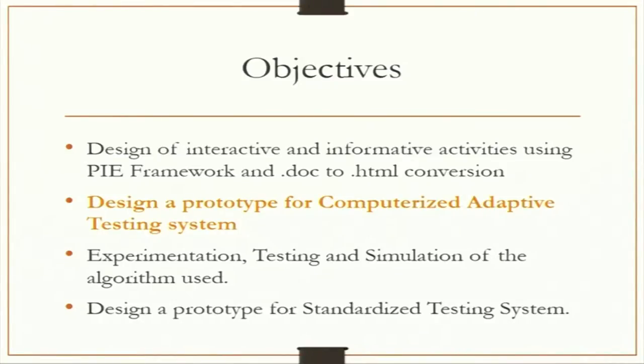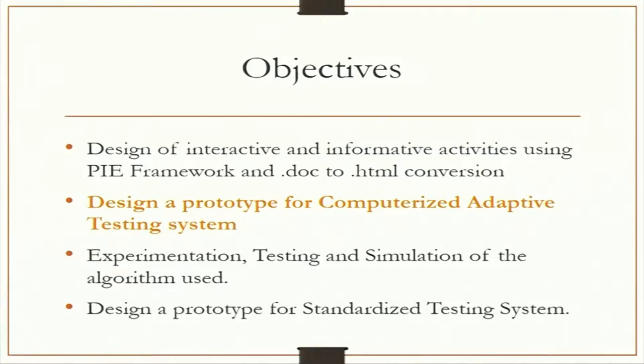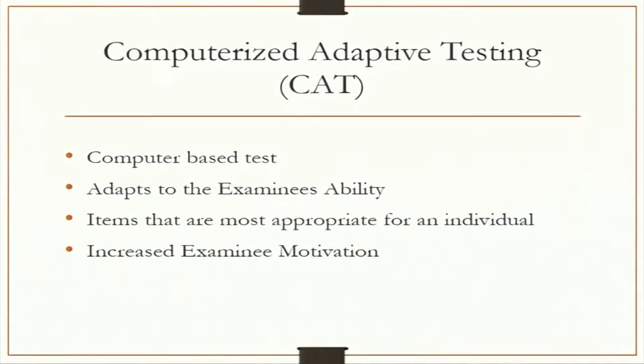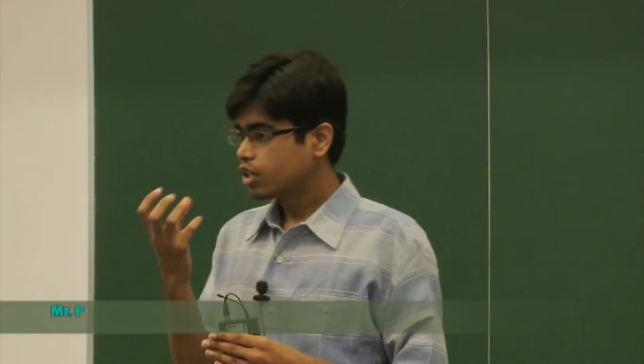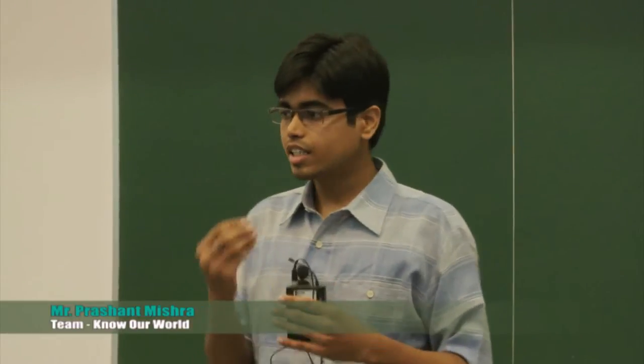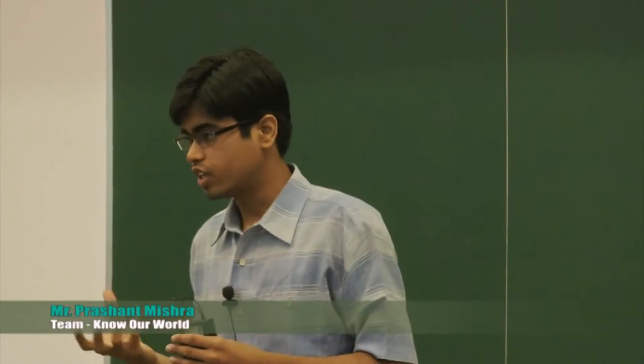Computerized adaptive testing is a system in which the difficulty of the test item tailors to the ability of the examinee. It is a computer-based test that tends to adapt itself to the ability of the examinee. An examinee with higher ability is not presented with questions of lower ability, so he does not waste time on questions below his range. Similarly, an examinee with smaller capabilities is not presented with questions of very high ability, thus providing the best possible motivation.